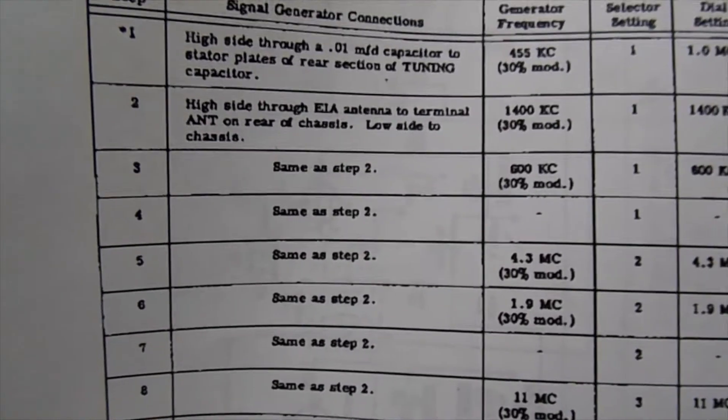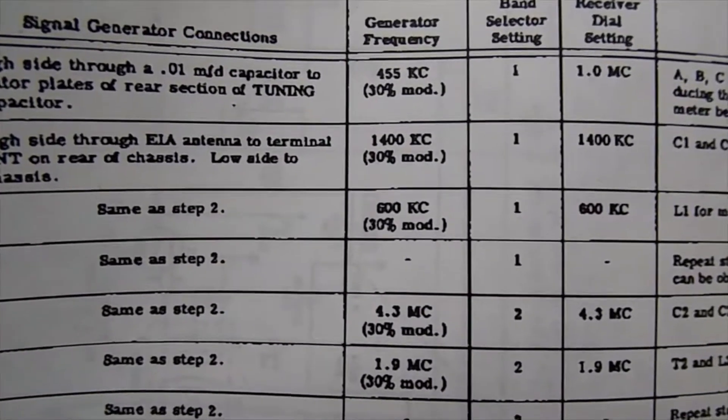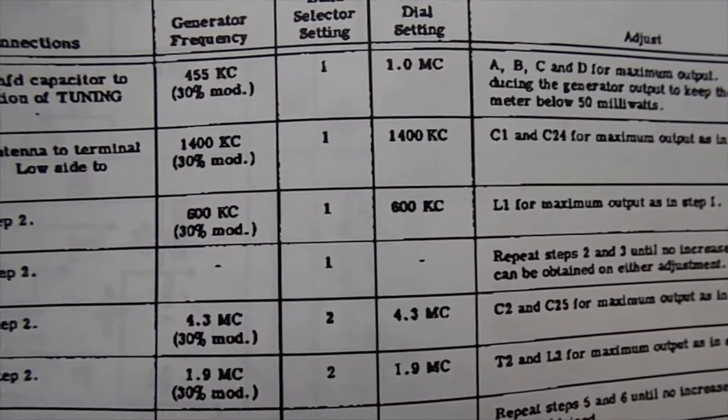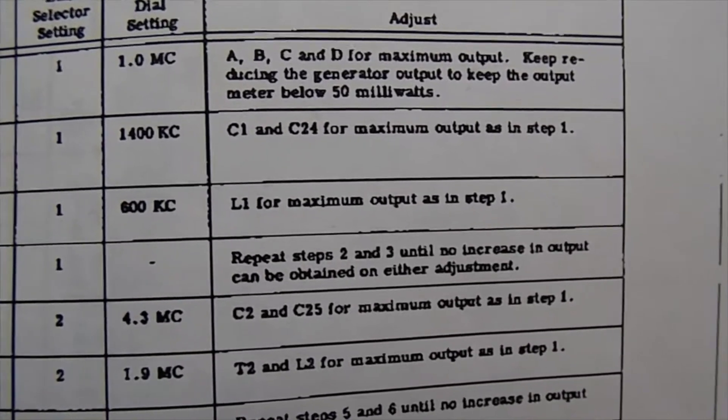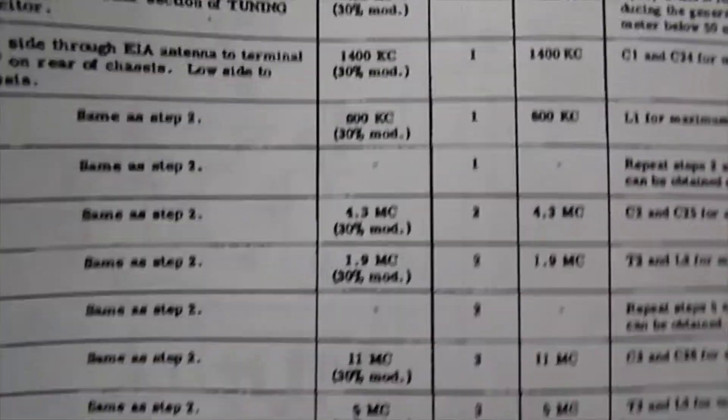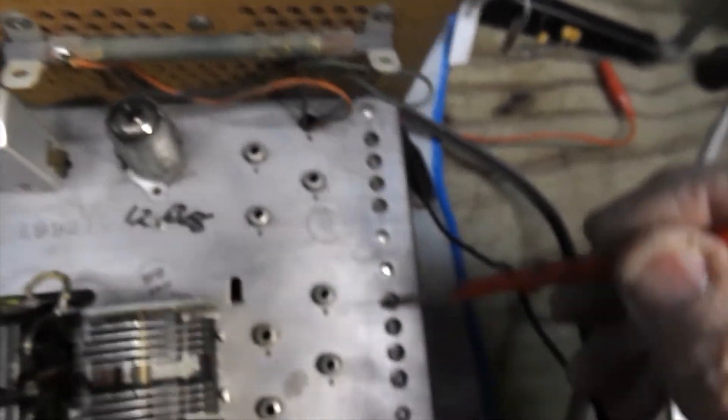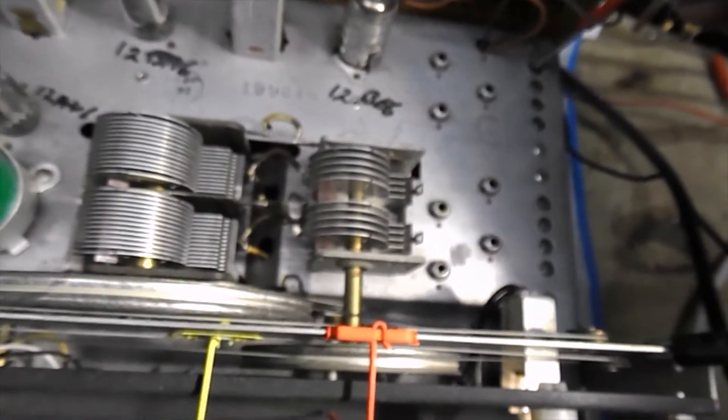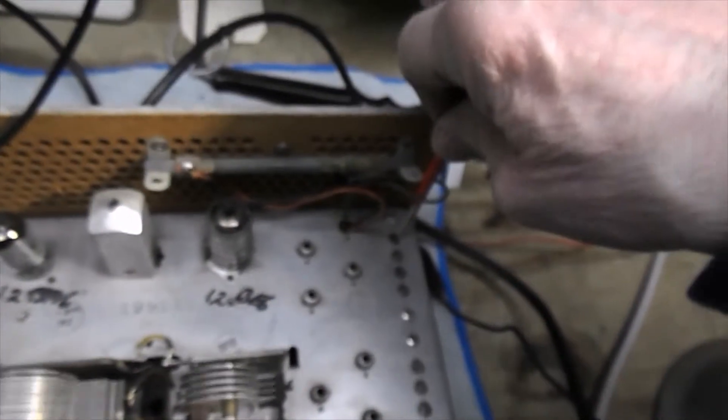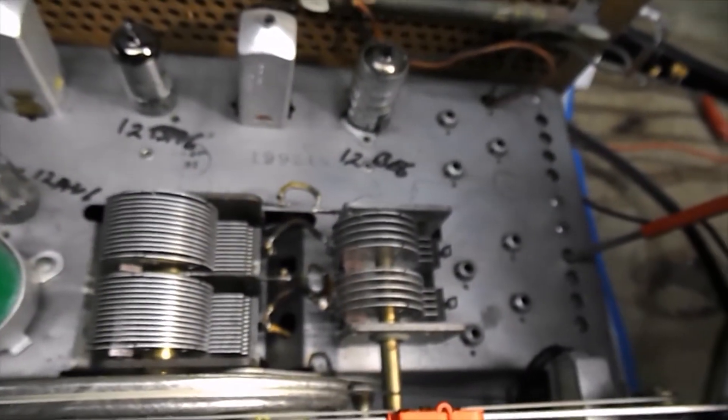Okay I'm going to go through the next steps in the alignment procedure. You'll see number two there says hook up to the dummy antenna. Set the frequency counter to 1400. Set the radio to 1400 and adjust C1 and C24 for maximum output as in step one. And then there's going to be all these other steps which I will probably have to do off camera. So this is C1 and this is C24. Let me go ahead and do this one.